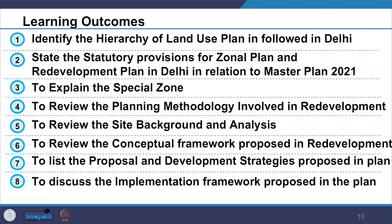The expected learning outcomes would be: you should be able to identify the hierarchy of land use plan followed in Delhi; state the statutory provision for zonal plan and redevelopment plan in Delhi in relation to the Master Plan 2021; explain the special zone; review the planning methodology; review the site background and analysis; review the conceptual framework; list the proposal and development strategies; and discuss the implementation framework proposed in the development plan.